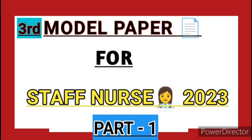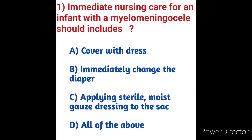First question: What should the immediate nursing care for an infant with a myelomeningocele include? Options: A) Cover with dress, B) Immediately change the diaper, C) Applying sterile moist gauze dressing to the sac, D) All of the above.